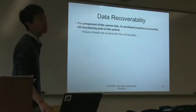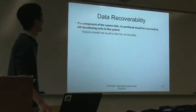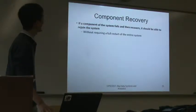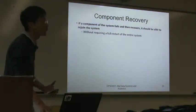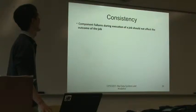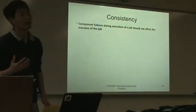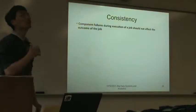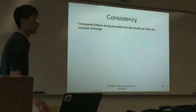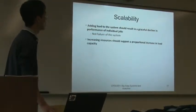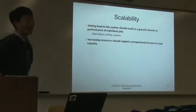The entire system failure and partial system failure — in case of failure, data should be recoverable. Not only data, but also the computation results should be recoverable. Also, keep consistency — unlike the relational data model, sometimes we lose some consistency in big data, but we'd better have a better state of consistency in our new system. And finally, it should be scalable.